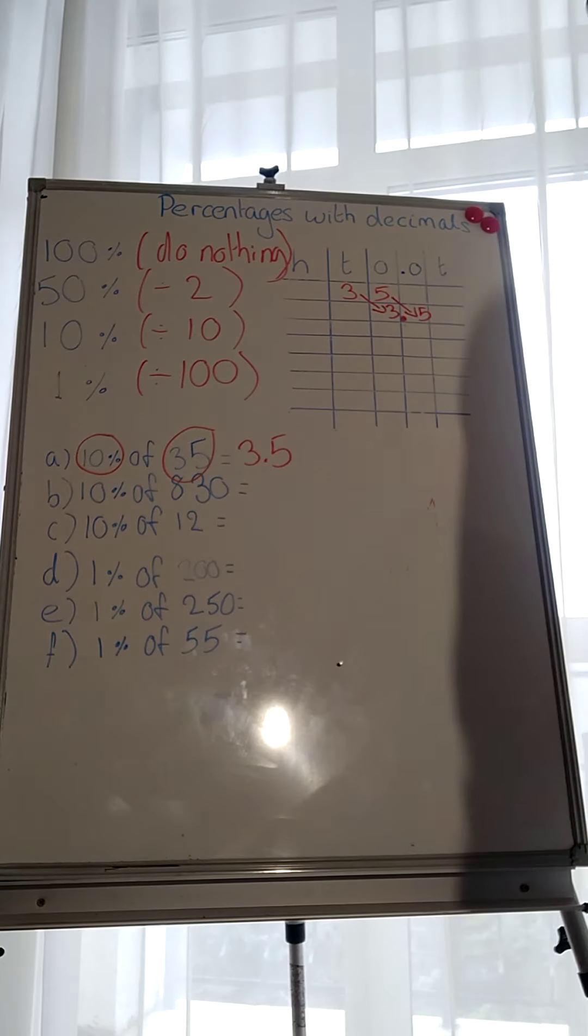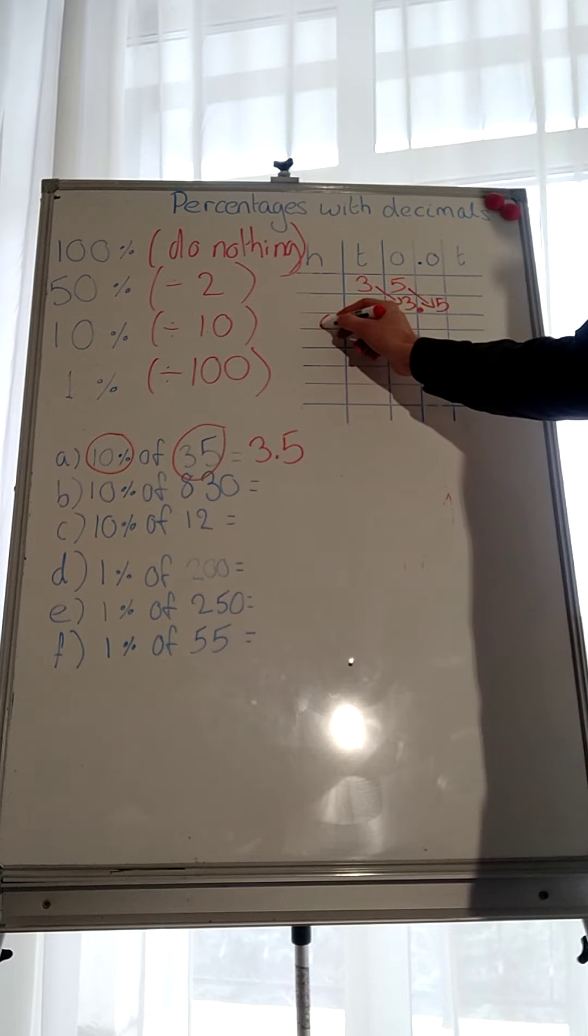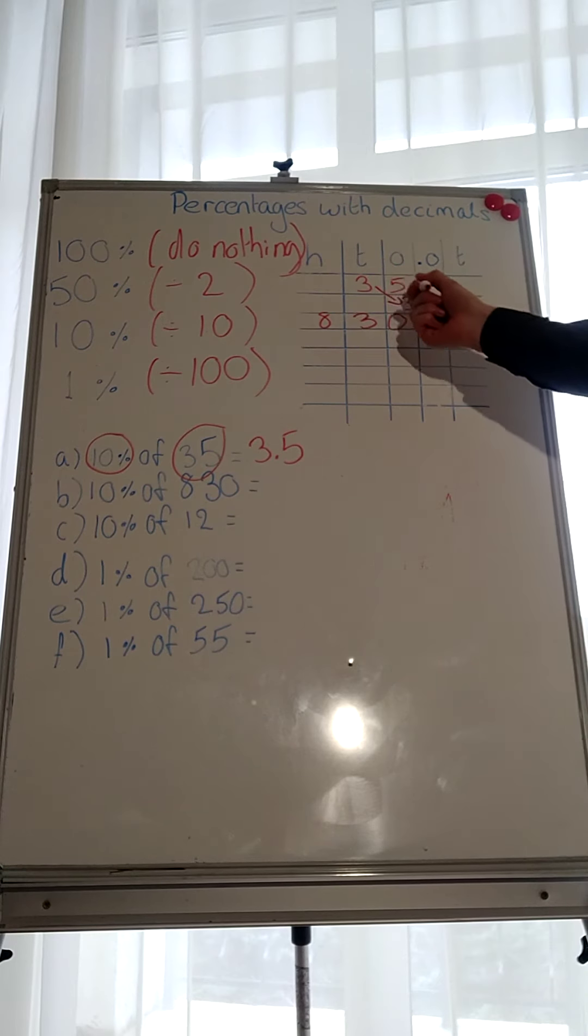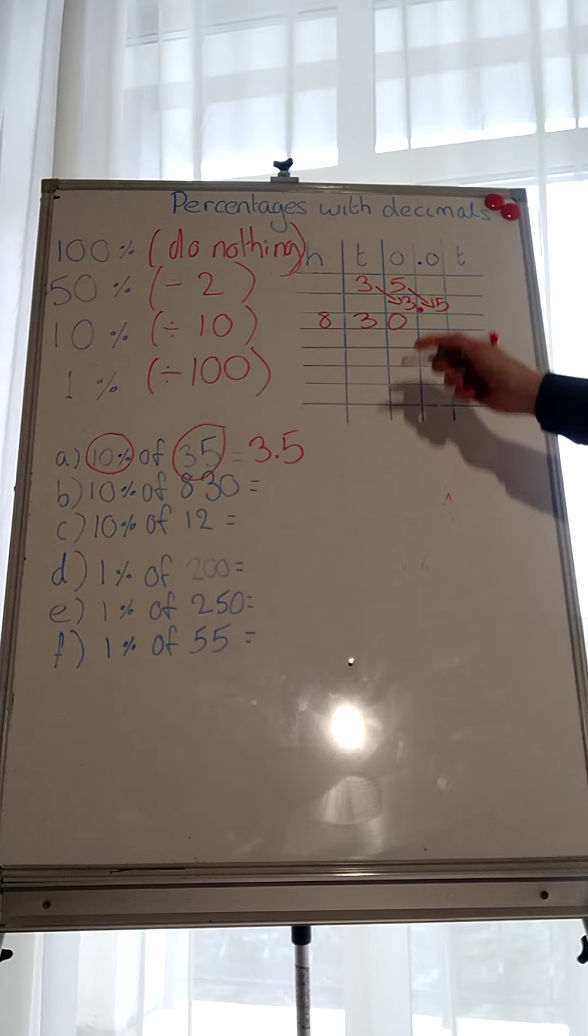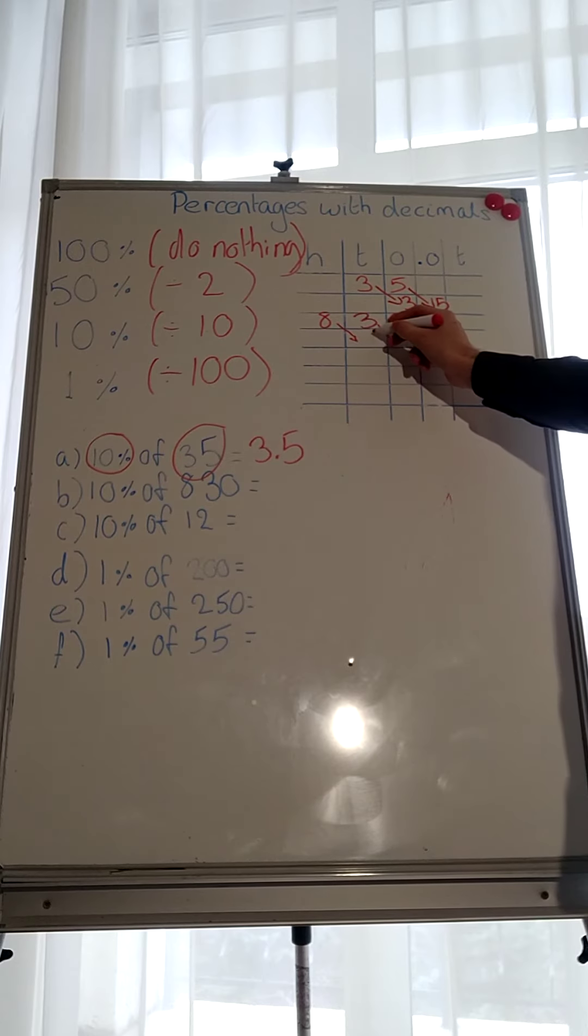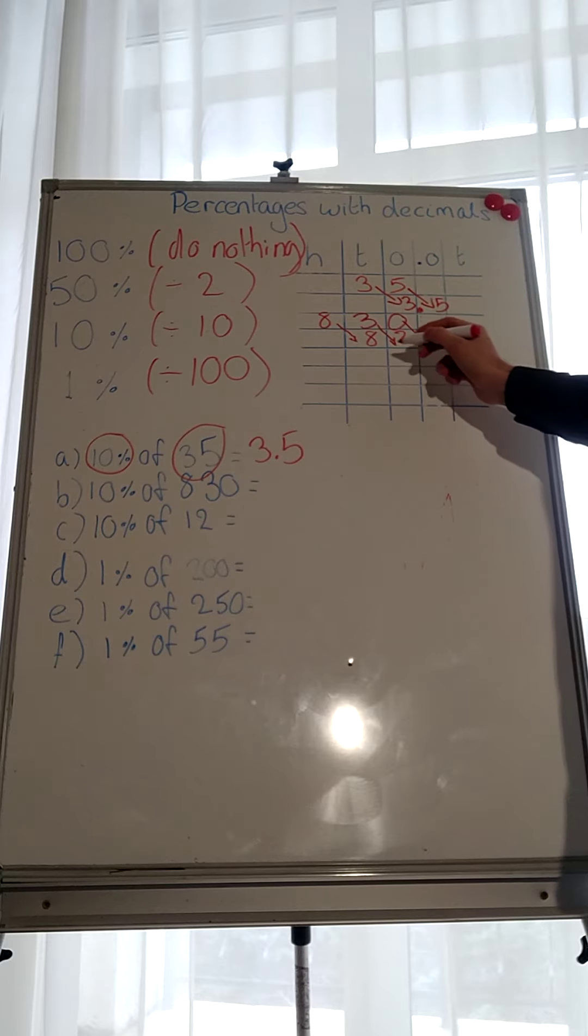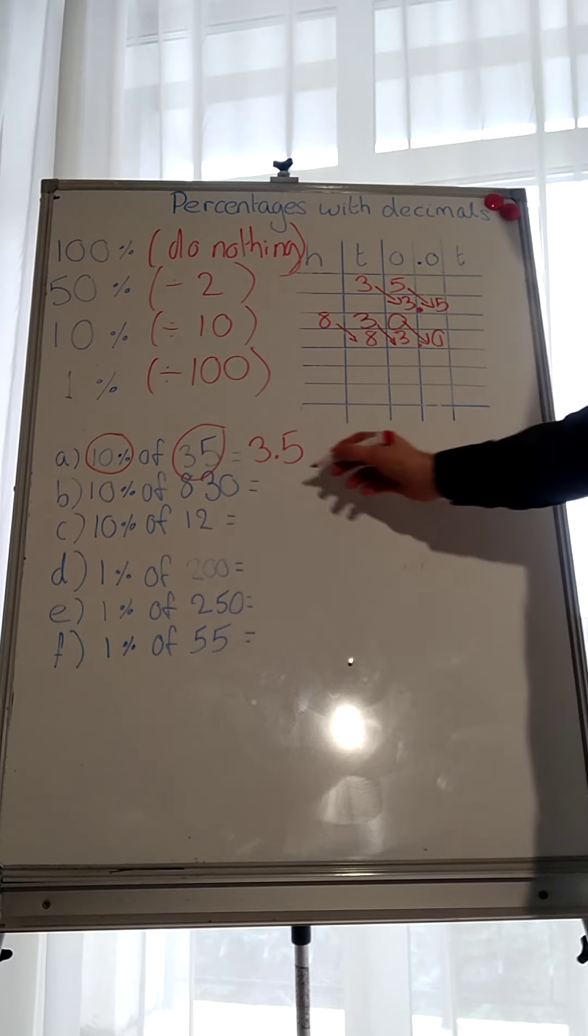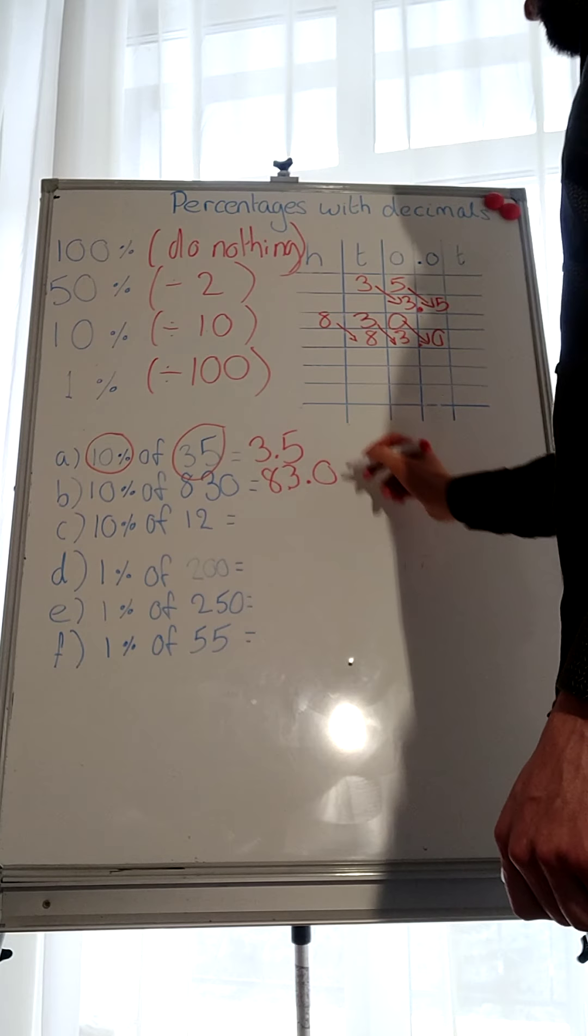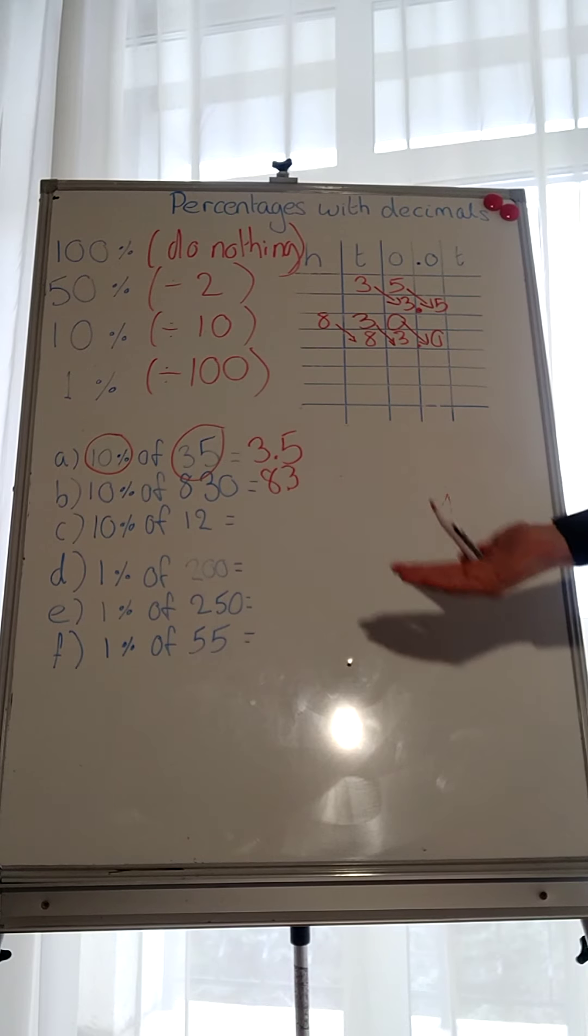So try to guess what we're going to be doing as we go through. So next one, 10% of 830. So 830. We're going to do 10%. So how many places do we move it? 1 to the right. So 8 is going to go here. 3 is going to go here. 0 is going to go here. Which gives us 83.0. We're going to write it here. 83.0. Now, because it's a whole number, we don't need 0.0. So the answer is just going to be 83.